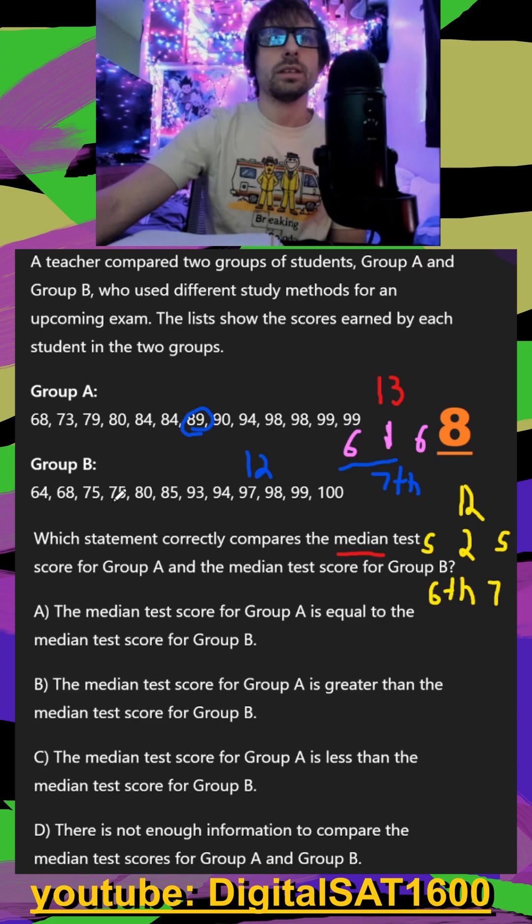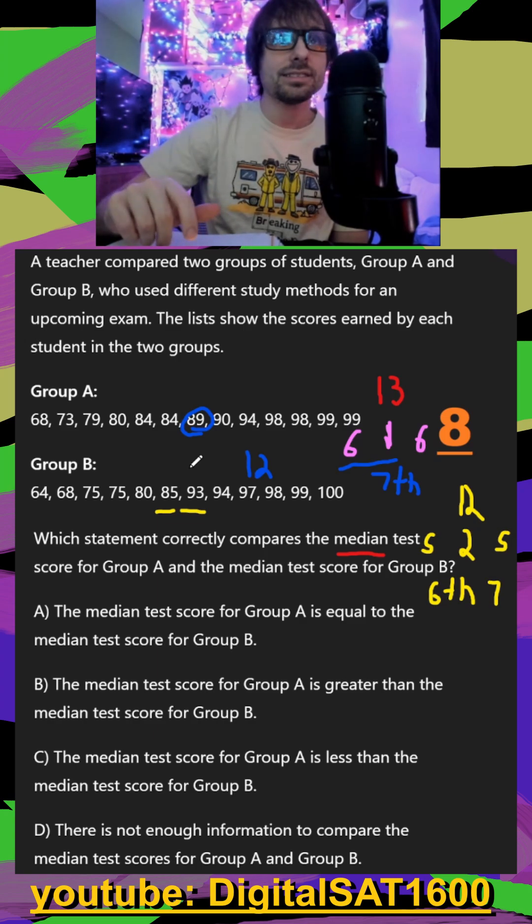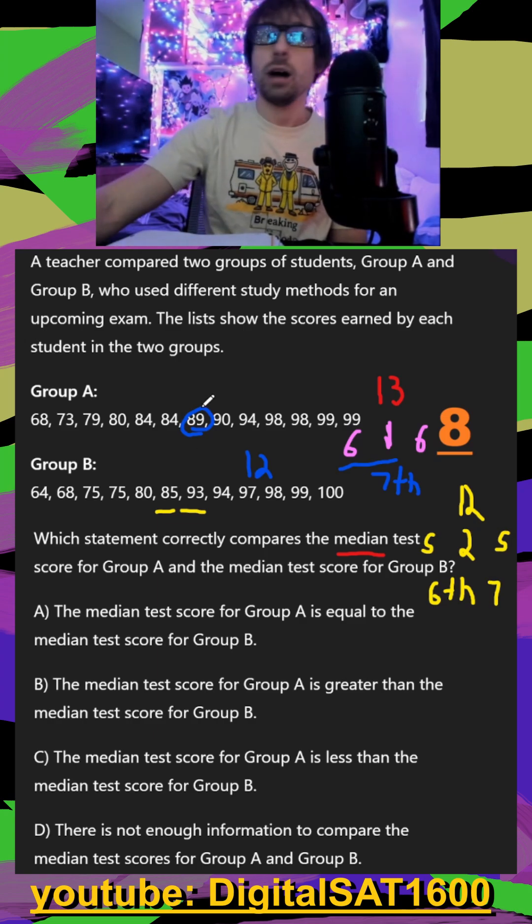Counting to the sixth and seventh positions, we can just take the average of these. If I add up 85 plus 93 and then divide by two to get my average, I get the same thing - I get 89 for the median of group B.